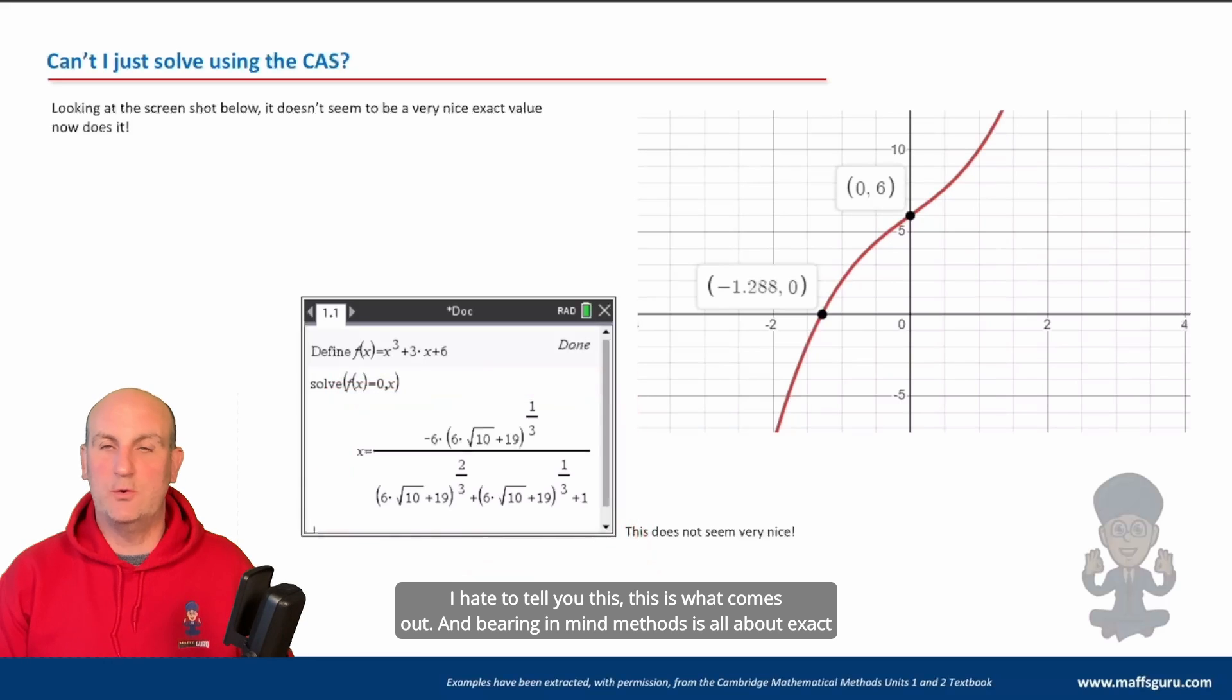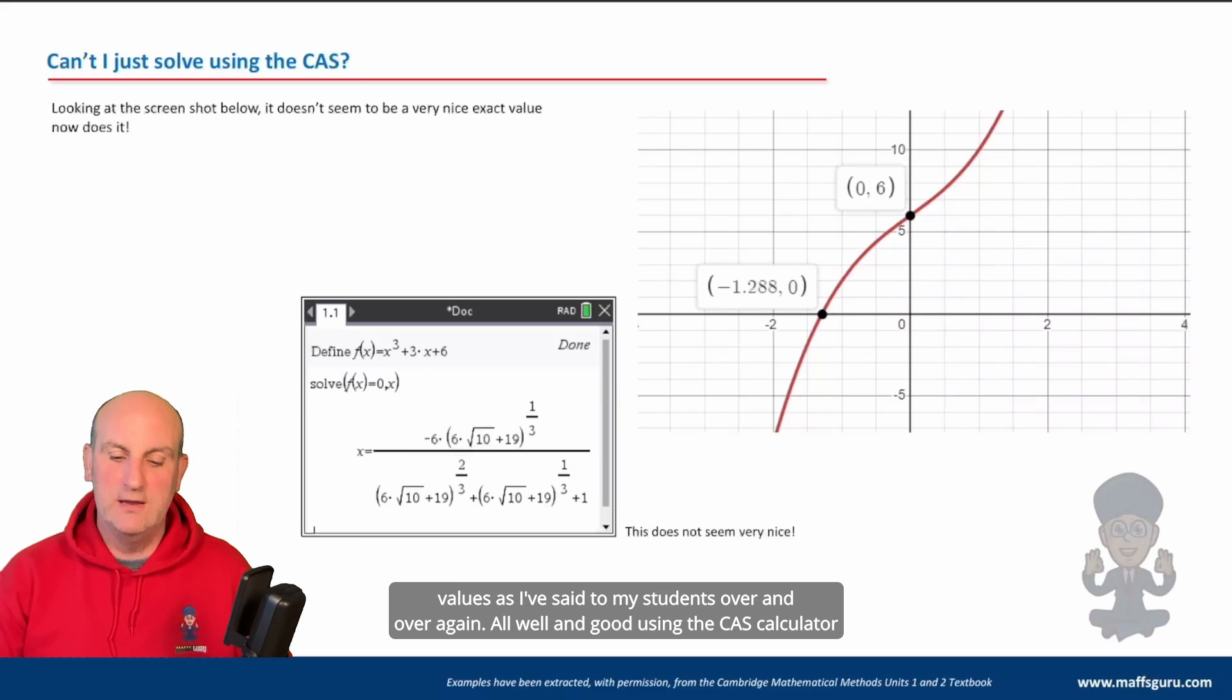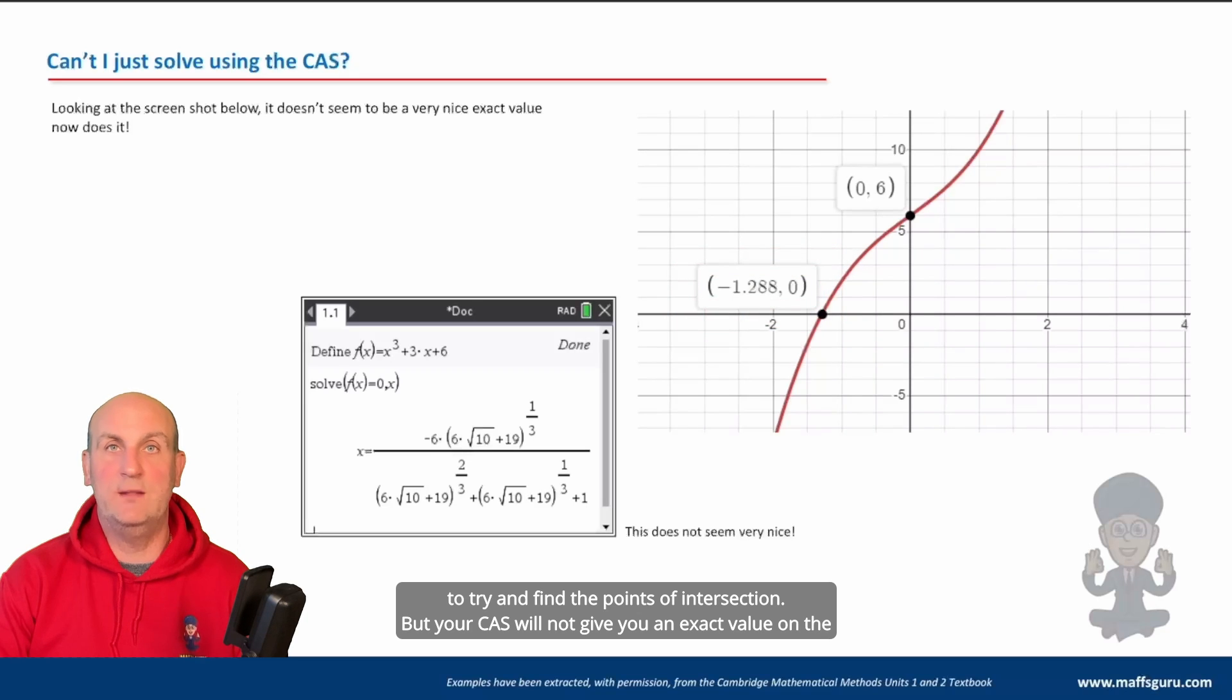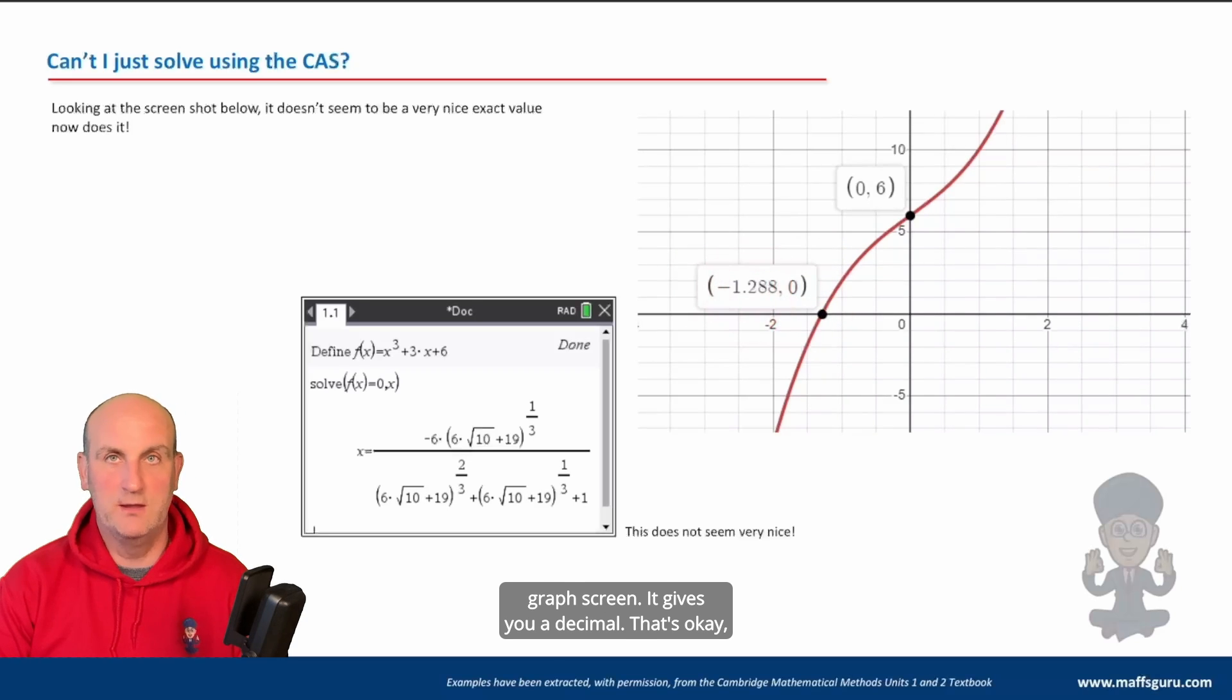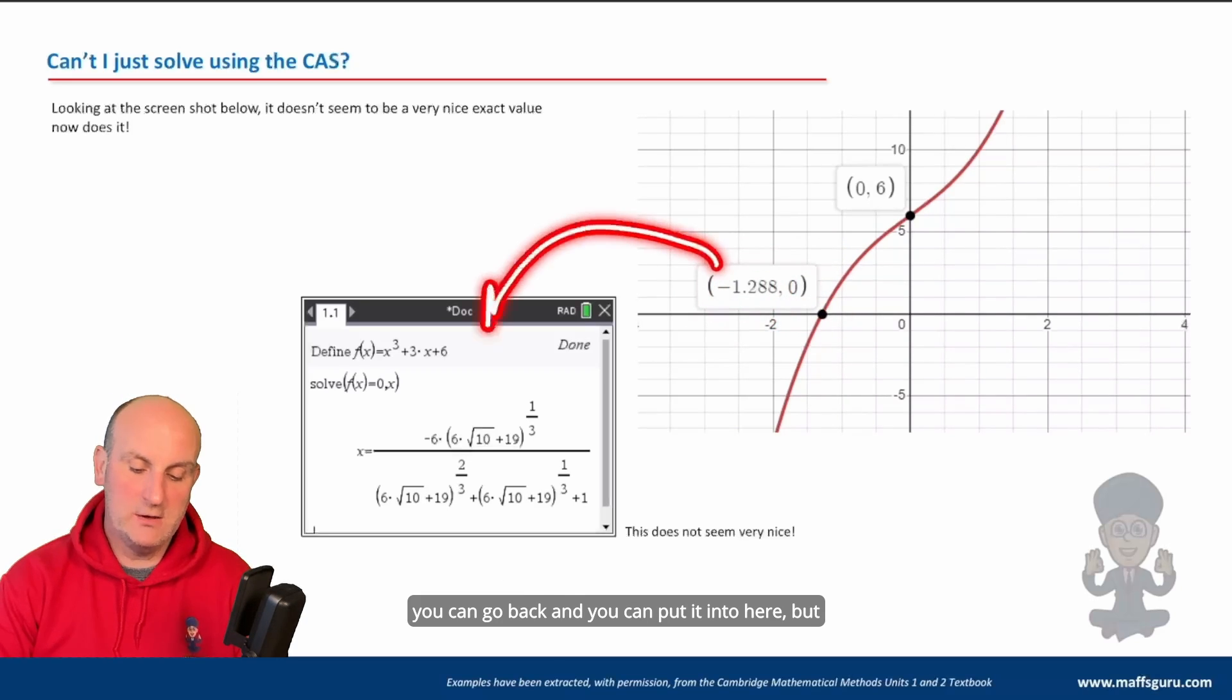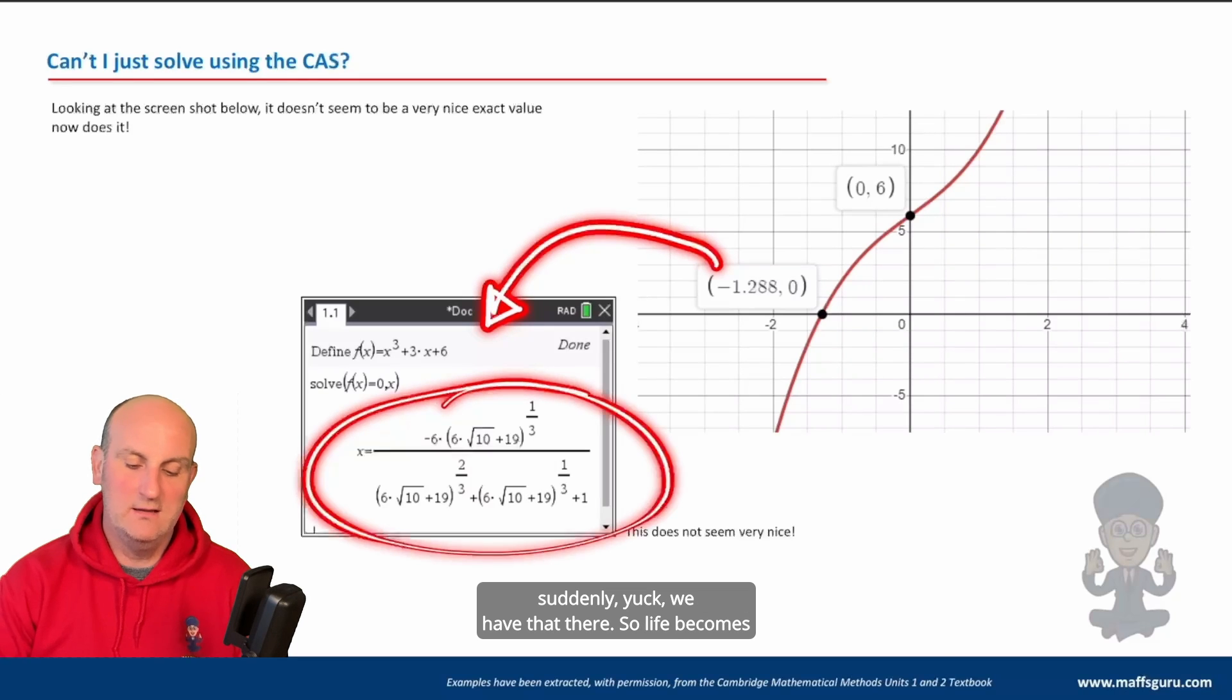And bearing in mind methods is all about exact values. As I've said to my students over and over again, all well and good using a CAS calculator to try and find the points of intersection. But your CAS will not give you an exact value on the graph screen. It gives you a decimal. That's okay, you can go back and you can put it into here. But suddenly, yuck, we have that there.